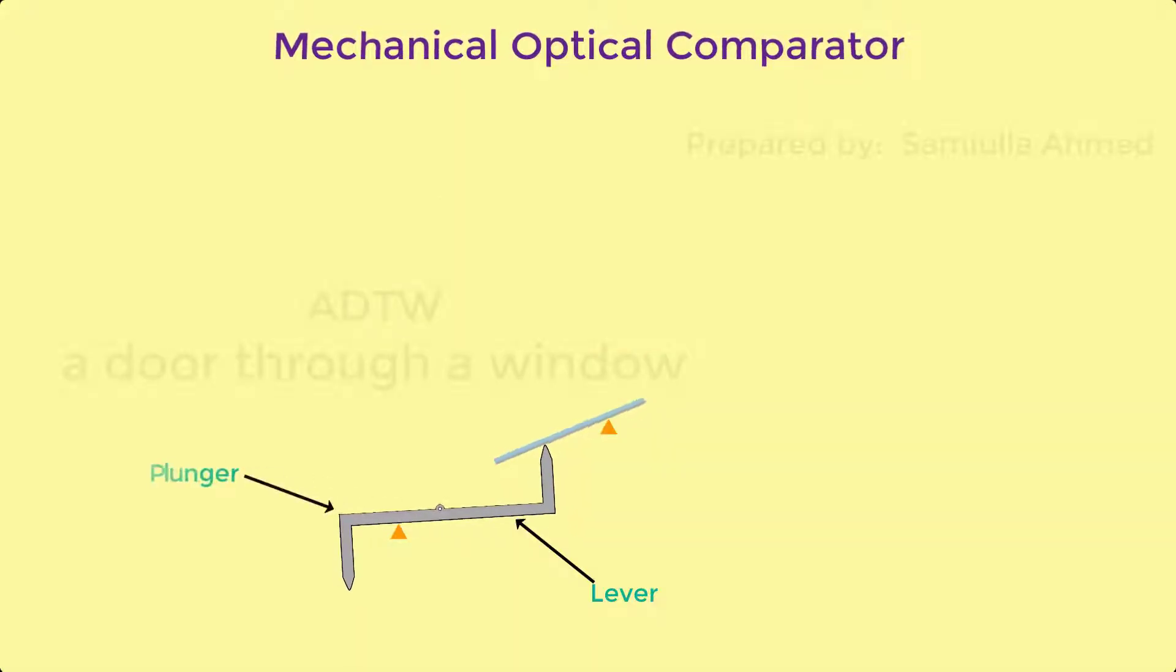The mirror is connected to the lever mechanism which is held by the pivot point. Small displacement of the measuring plunger is initially amplified by a lever mechanism pivoted about a point.